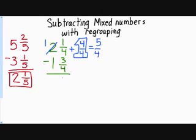5 fourths minus 3 fourths is 2 fourths. 1 minus 1 is 0. My 2 fourths is a correct answer, but I need to simplify it. So I'm going to divide both of them by 2.